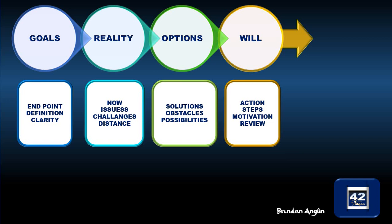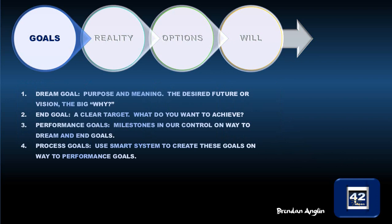The Goals section breaks down into four specific areas. First, the inspiring one is your Dream Goal — the big 'why,' where you would really like to be at the end of everything. The End Goal is what Sir John Whitmore calls the big 'what' — a clear target, what you want to achieve more specifically. Your Performance Goals, unlike the End Goal and Dream Goal, are 99% in our control and are on the way to achieving our dream and end goals.